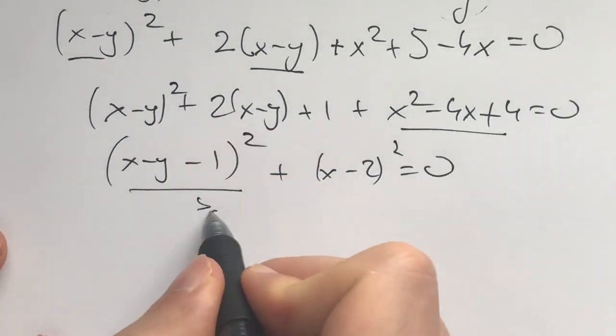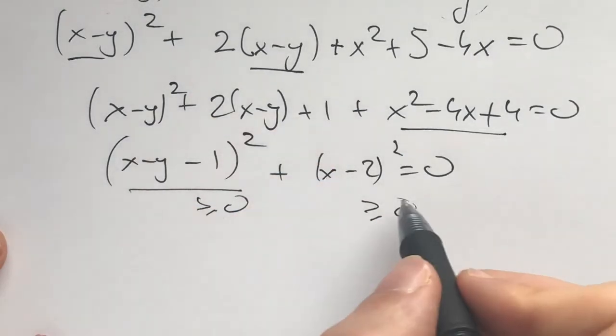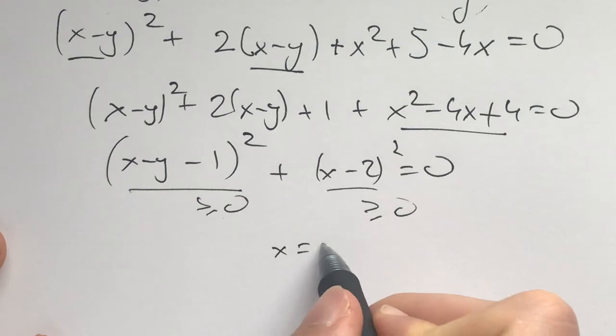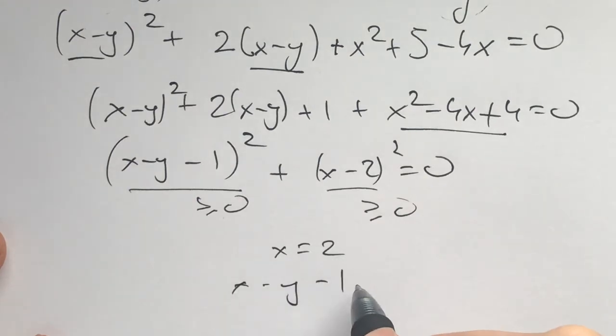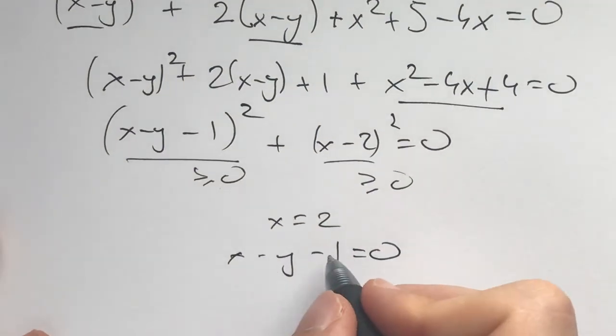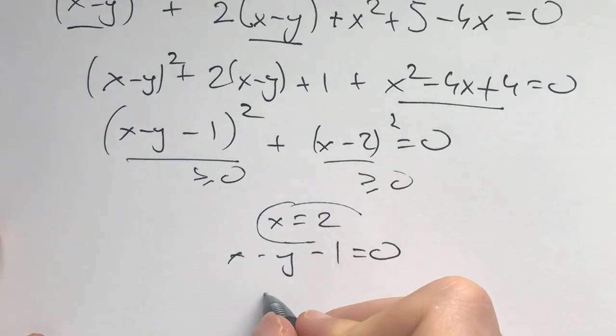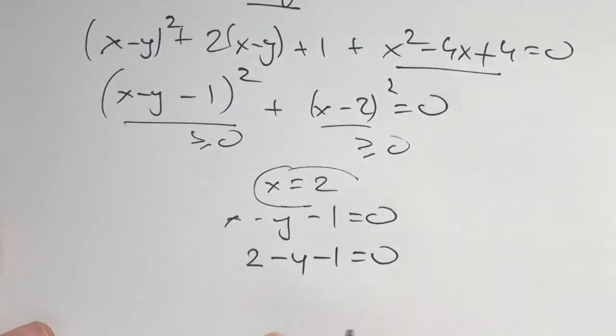These things are always greater than or equal to zero. The equality holds when x equals 2 and x minus y minus 1 equals 0. This thing is true because x equals 2. We have 2 minus y minus 1 equals 0.